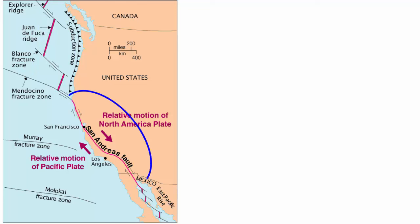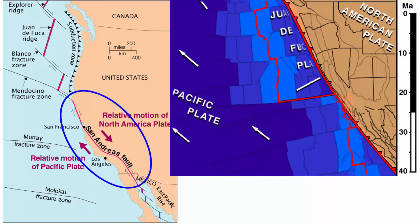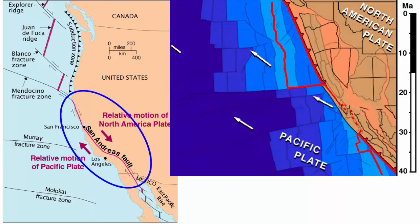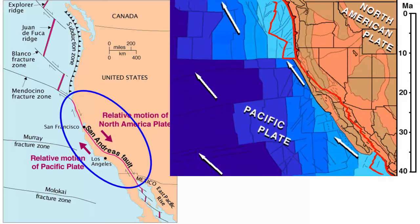The zone between the two active spreading centers is just one big transform boundary that connects the two. What used to be between them has long since subducted under the continent. That transform boundary is known to us more commonly as the San Andreas fault system.